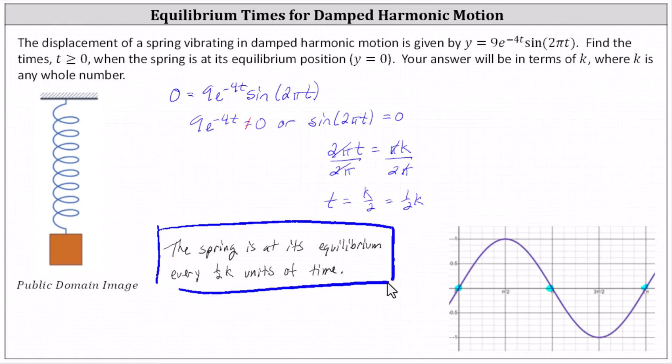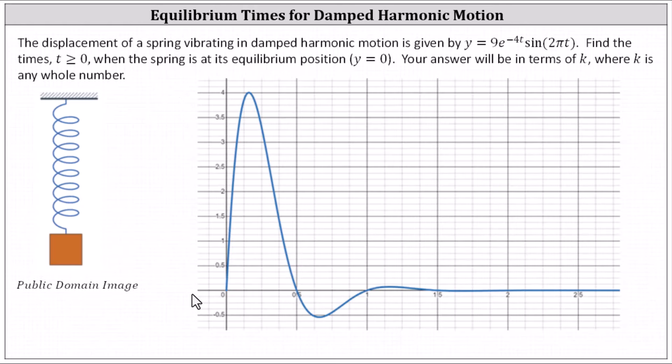Let's go ahead and verify this by graphing the damped harmonic motion function. Notice we do have horizontal intercepts, or t intercepts, at t equals zero, t equals one half or 0.5, t equals one, t equals 1.5, and so on, where the time t is equal to one half k where k is any whole number. I hope you found this helpful.